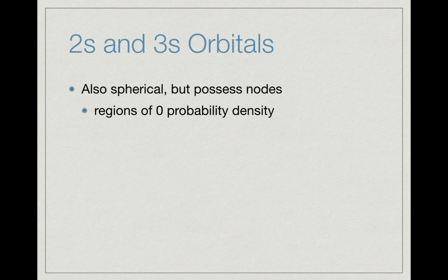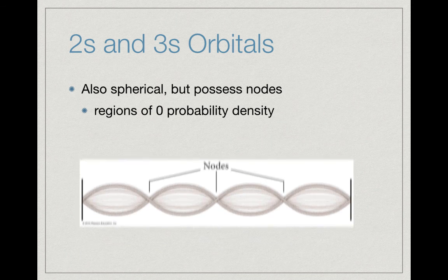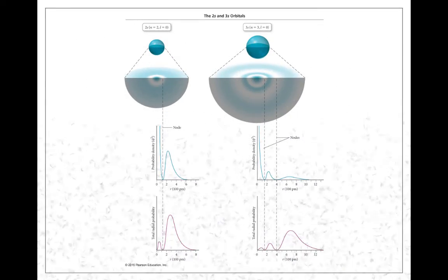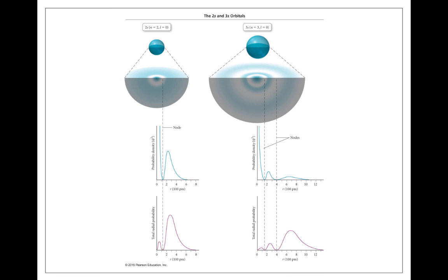If we go beyond the 1s and look at the 2s and 3s orbitals, they are still spherical. However, inside the orbital we get nodes of probability—a node is a region of zero probability density. The easiest way to look at this is the amplitude of a wave when you're waving a rope back and forth. Where the amplitude is zero, and similarly in the wave function of an electron, the probability density becomes zero. There are areas where, because of the wave function, we have zero probability of finding an electron.